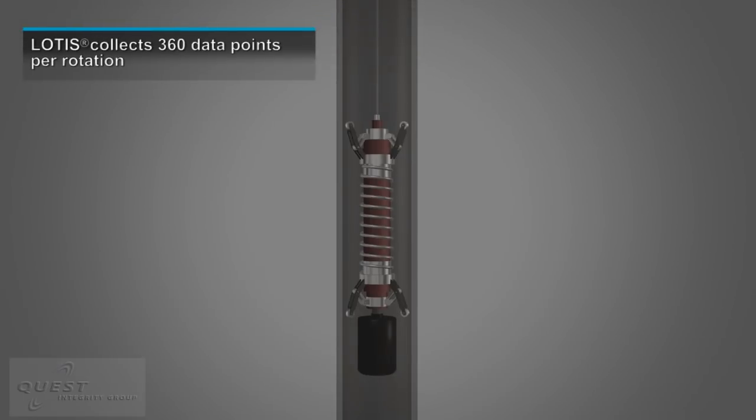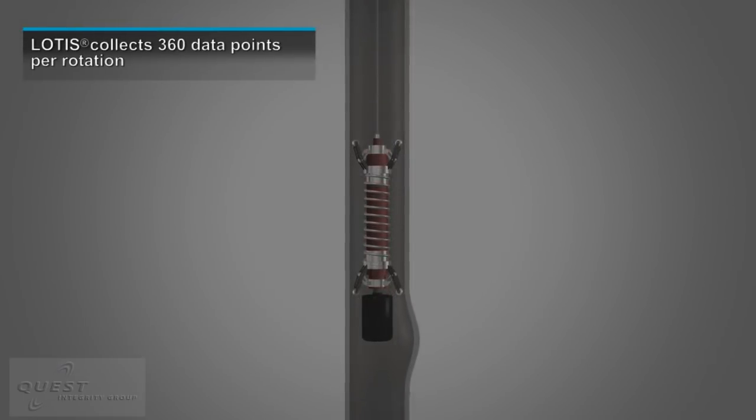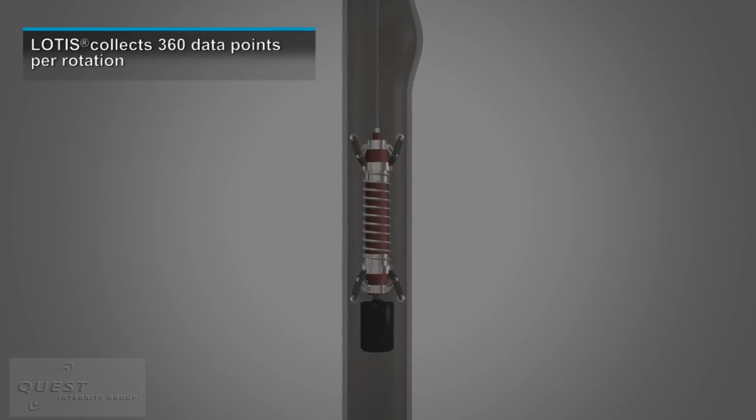During the inspection, the probe head spins at a rate of 1800 RPM and collects 360 inspection data points per rotation.